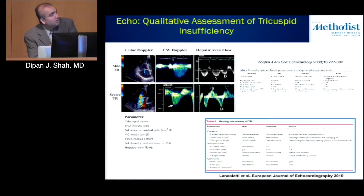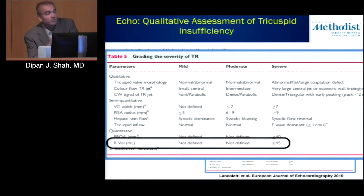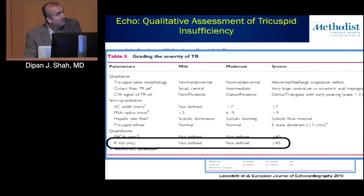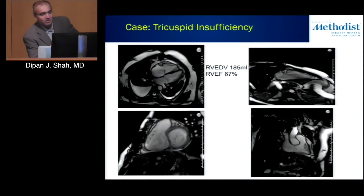There are echo guidelines that help quantify tricuspid regurgitation, including the American Society of Echo guidelines from 2003, currently being updated, and the European guidelines from 2010. The European guidelines suggest that a regurgitant volume greater than 45 mLs would be considered severe tricuspid regurgitation — though there may be some controversy about this cutoff. The majority of cases in practice tend to be secondary tricuspid regurgitation.